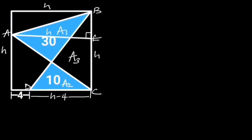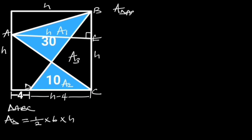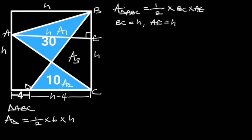Going further, let's focus on triangle ABC. Let's recall that the area of a triangle is 1/2 times base times height. It follows that the area of triangle ABC is equal to 1/2 times BC times AE. Since BC is equal to H and AE is also equal to H, the area of triangle ABC will be equal to 1/2 times H times H, which is equal to H squared over 2.